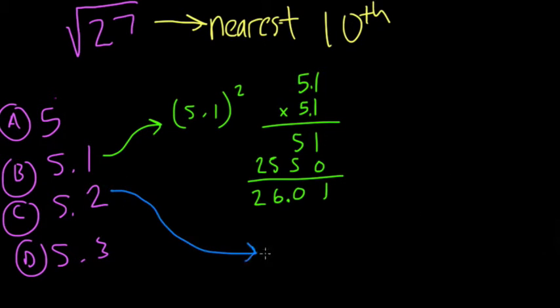Next, I'll jump to 5.2. So 5.2 times 5.2. I just think initially of 52 times 52, and we get 2 times 2 is 4, 2 times 5 is 10, then 0, 5 times 2 is 10, 5 times 5 is 25, plus 1, that's 26. So what happens is I get 27.04,